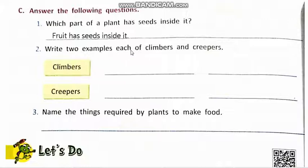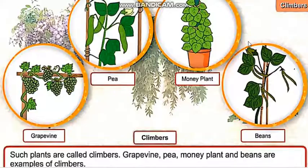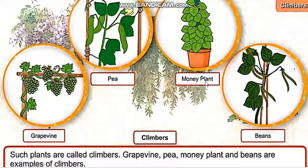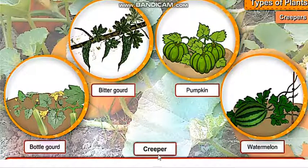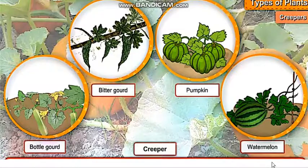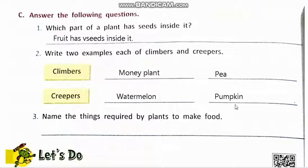Question number 2. Write two examples each of climbers and creepers. Climbers examples: grape vine, pea, money plant, bean. We will write pea and money plant. Next, creepers examples: bottle gourd, bitter gourd, pumpkin, watermelon. We will write pumpkin and watermelon.